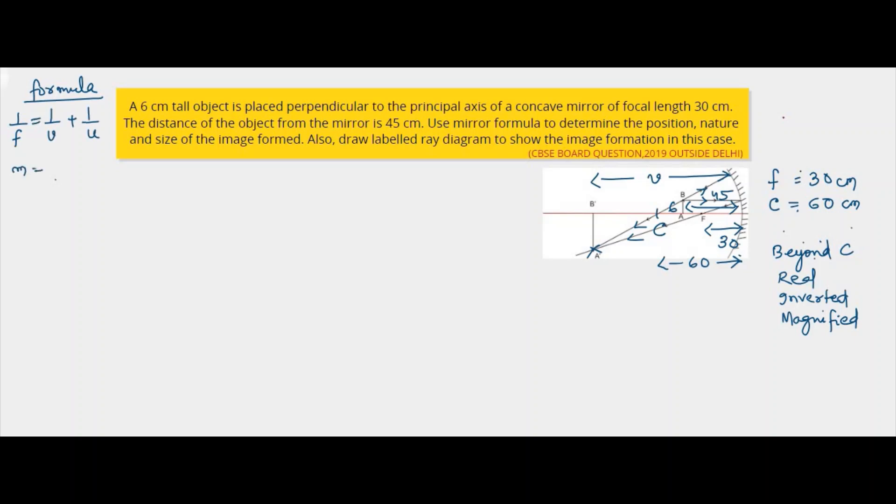And then since size is asked, so we have to write height of image by height of object, which is negative image distance by object distance. So let's solve it.